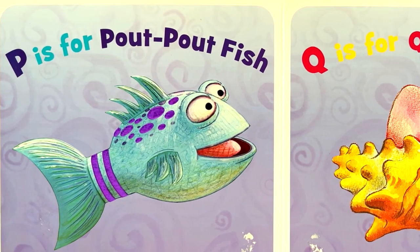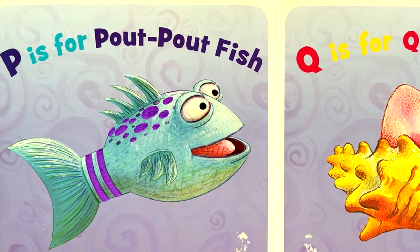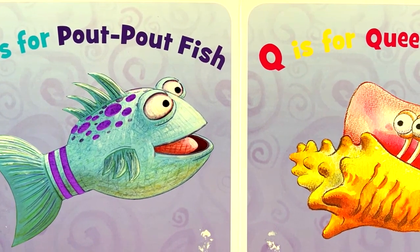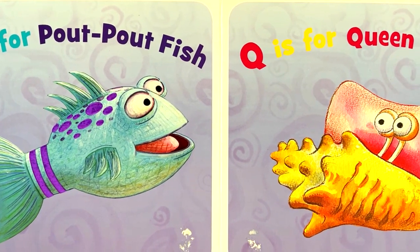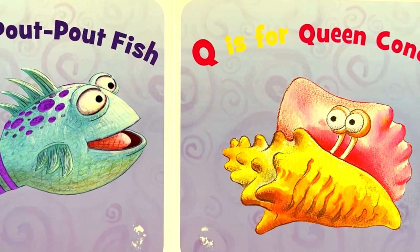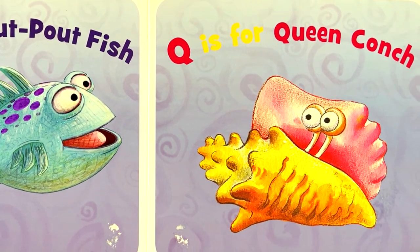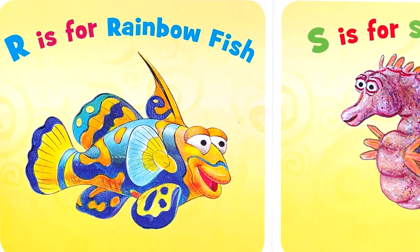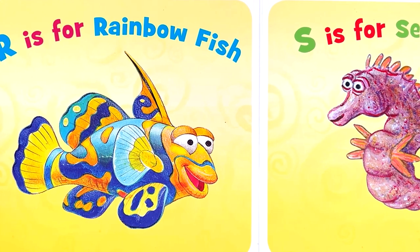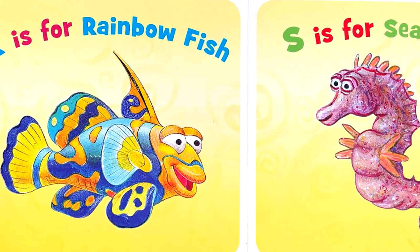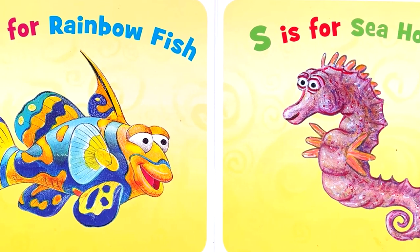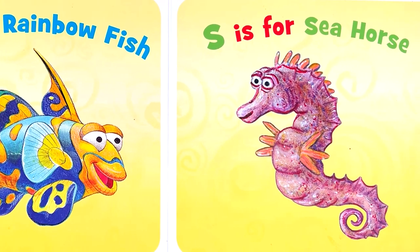P is for Pout-Pout Fish. Q is for Queen Conch. R is for Rainbow Fish. S is for Seahorse.